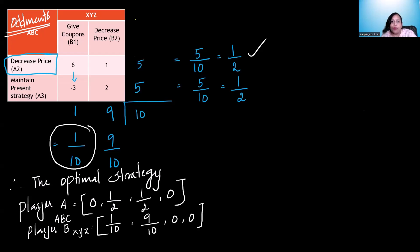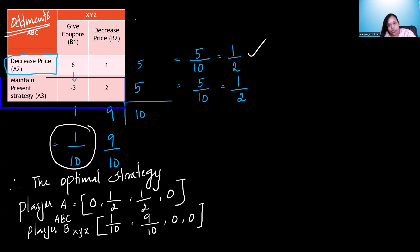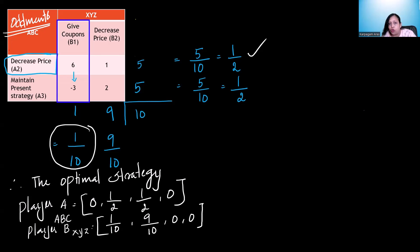This is the optimal strategy. For company ABC out of four strategies: the first (giving coupons) is eliminated, use decreasing price 50% of the time, maintaining present strategy 50% of the time, and increasing advertising is eliminated. For player B (XYZ): give coupons 10% of the time and decrease prices 90% of the time. The third and fourth strategies are not used.